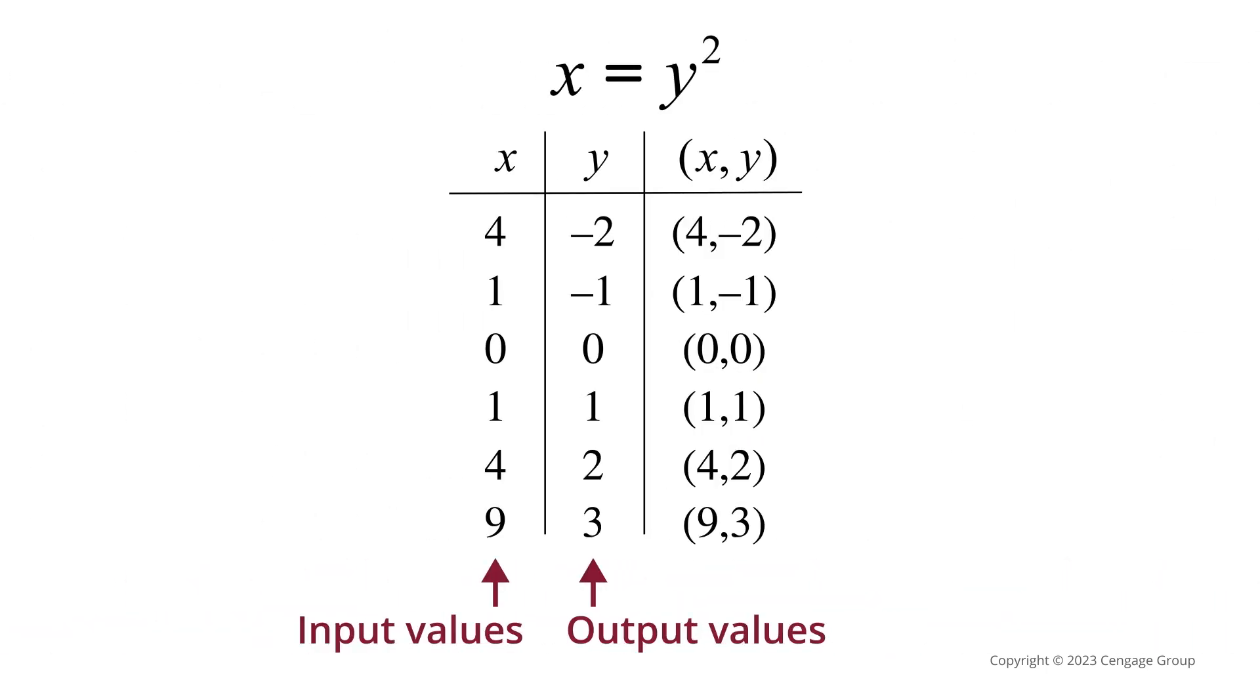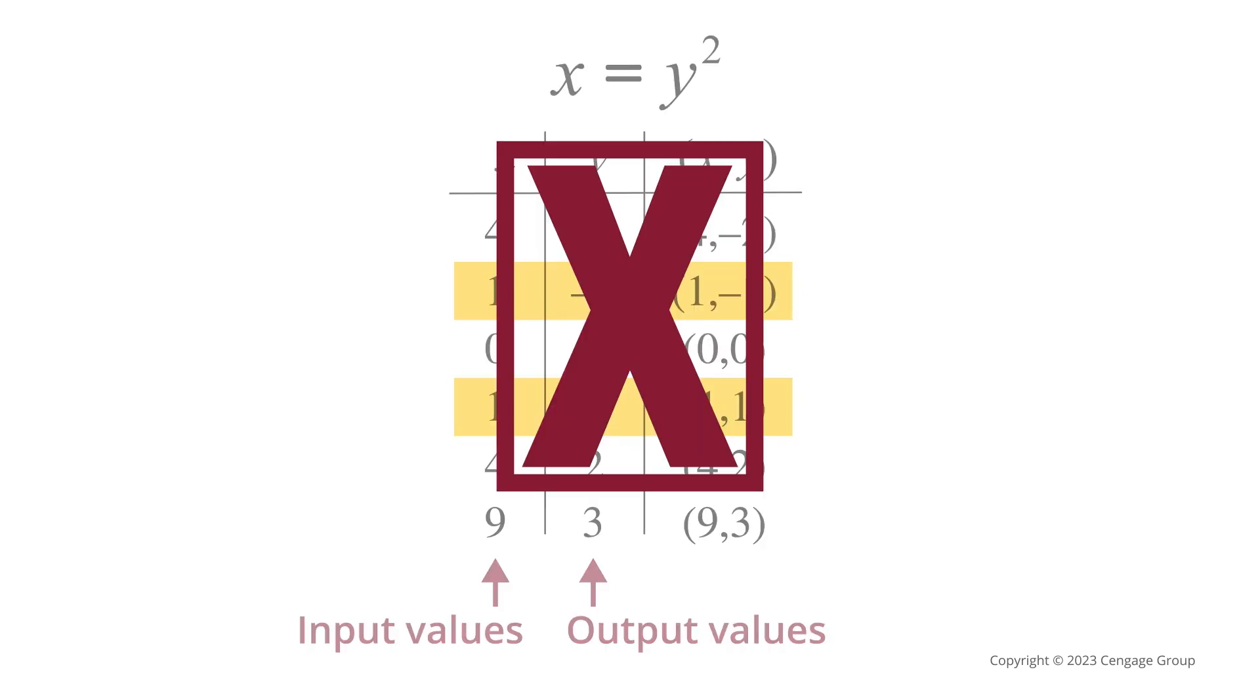On the other hand, here's a table for the relation x equals y squared. This table does have a repeated x value, positive 1, that corresponds to two different y values, negative 1 and positive 1. So because there is at least one input value with two different output values, this relation is not a function.